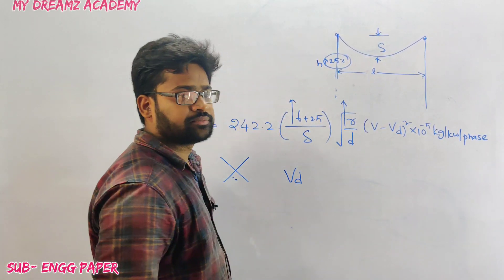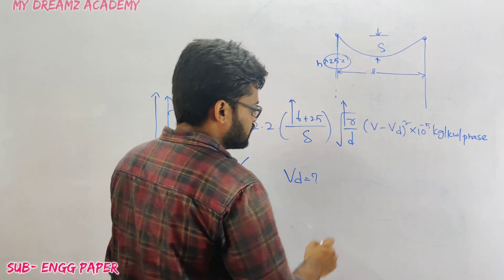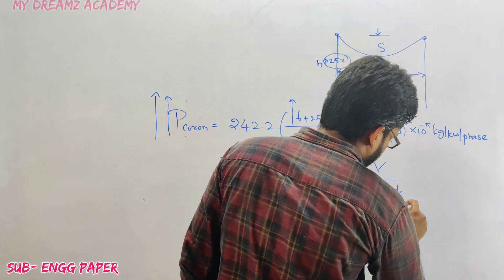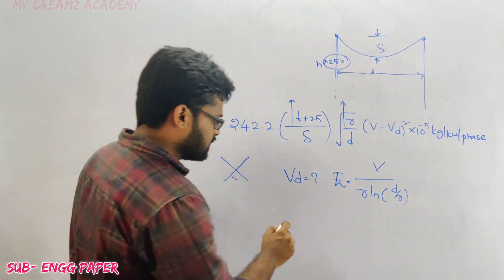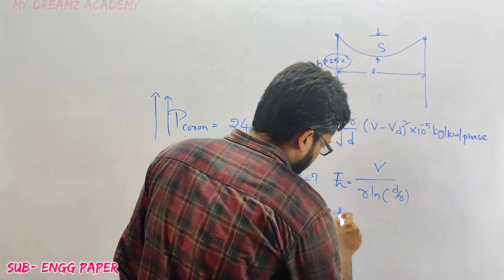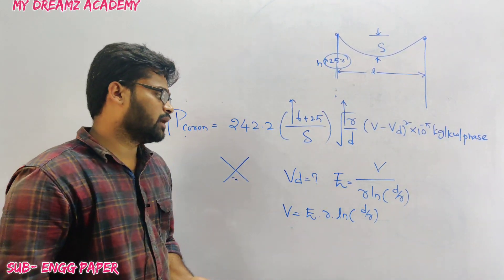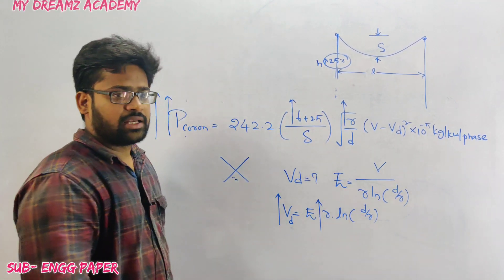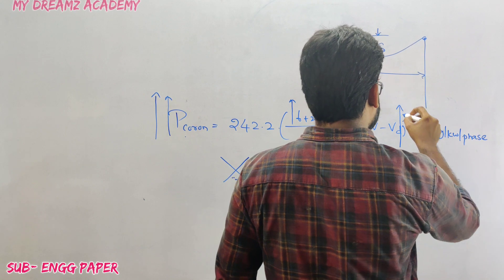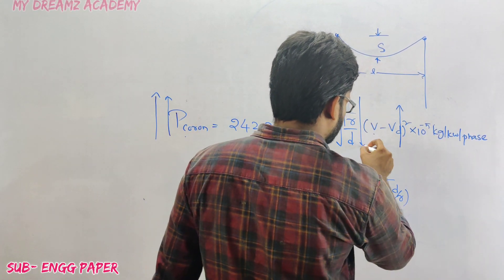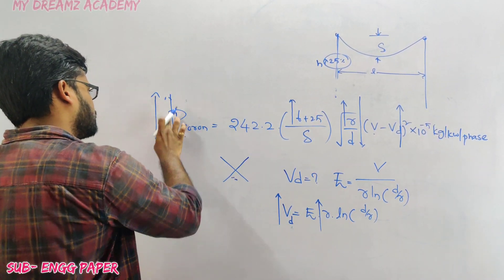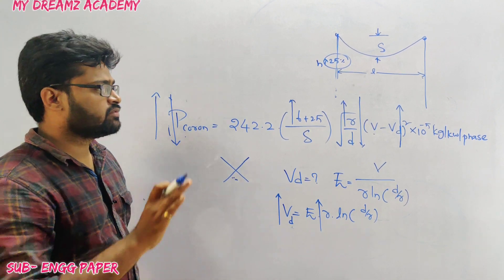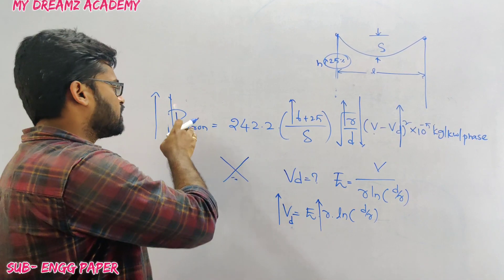We need to calculate the critical disruptive voltage Vd. The electric field intensity E = V / (R × ln(D/R)), so V = E × R × ln(D/R). Whenever the radius of the conductor increases, Vd increases. If Vd increases, the term (V − Vd) decreases, so corona loss decreases. Therefore, if the radius of the conductor increases, corona loss decreases — not increases.